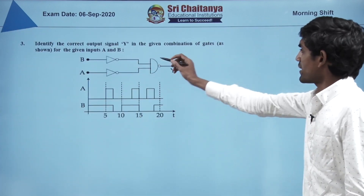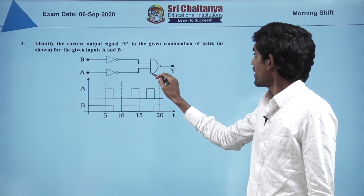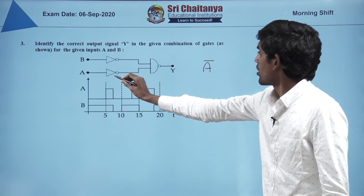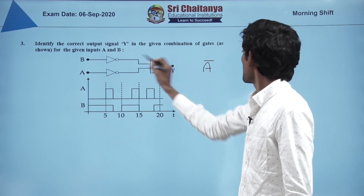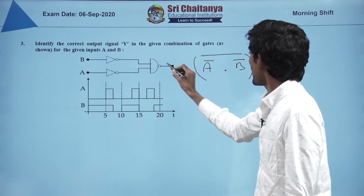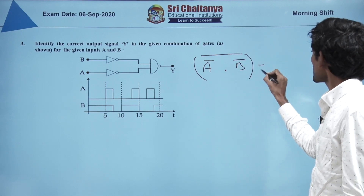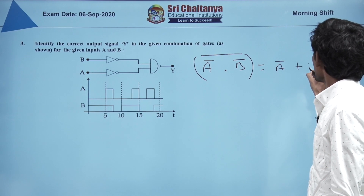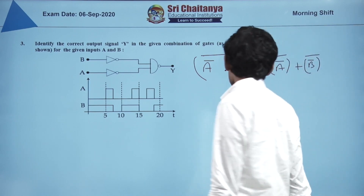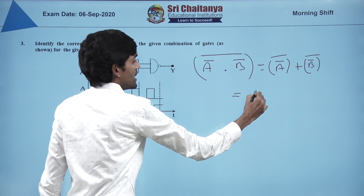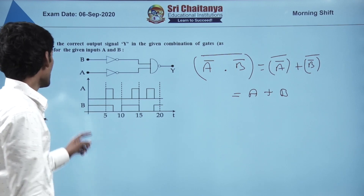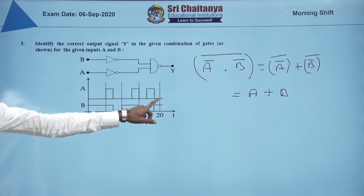We see that this is a NOT gate, NOT gate, and this is a NAND gate. Let us represent this in the form of an equation. This gives Ā and B̄ with an AND, and the whole has a bar because it is NAND. This gives us directly (Ā·B̄)̄, which equals A + B — a simple OR gate. If we see the given graph, we just need an OR gate for the solution.